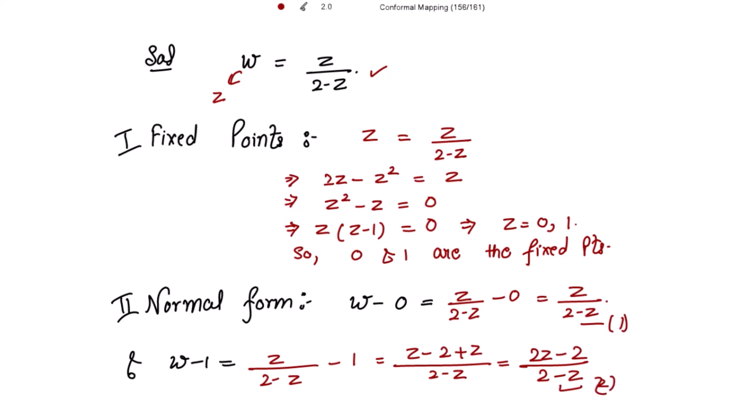Dividing equation 1 by equation 2, on the left-hand side we get w/(w - 1), and on the right-hand side we get [z/(2 - z)] divided by [(2z - 2)/(2 - z)], which simplifies to z/(2z - 2).